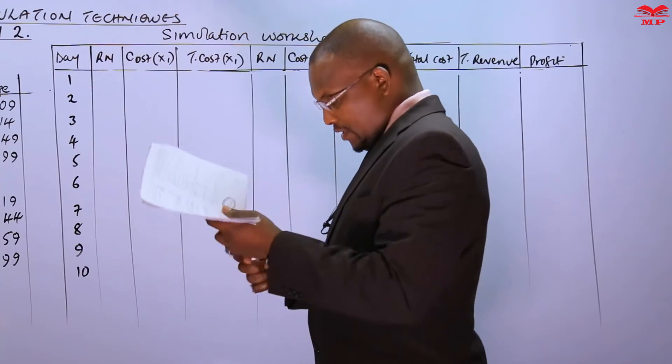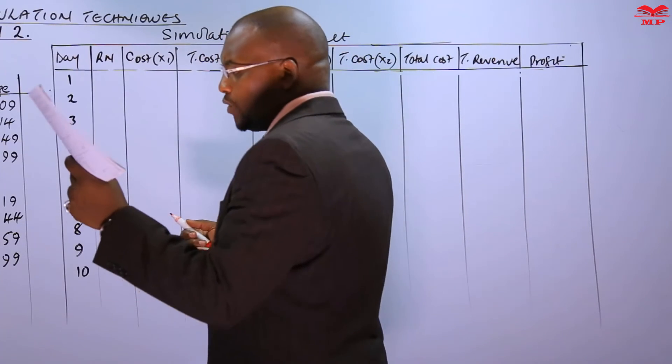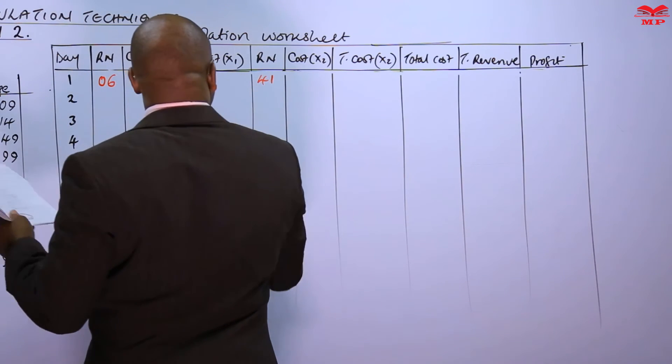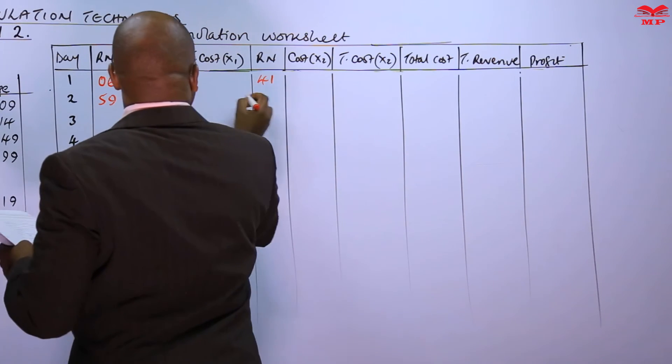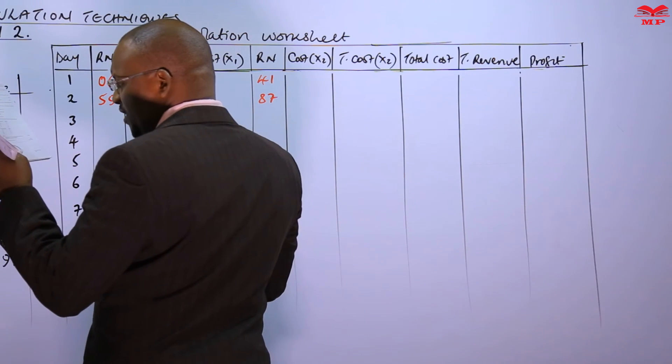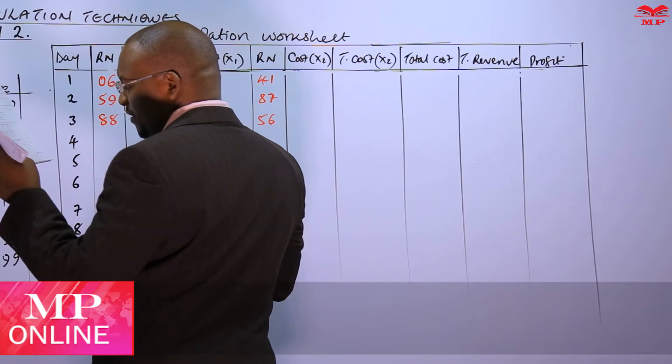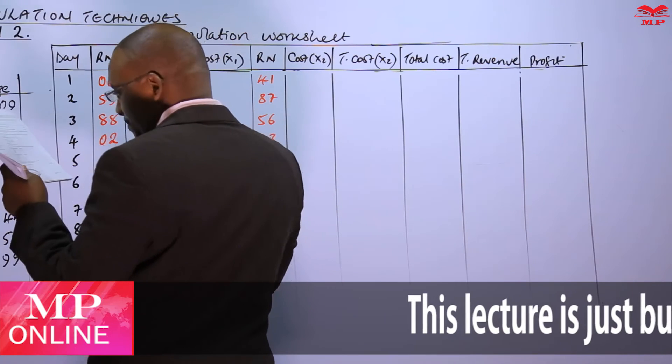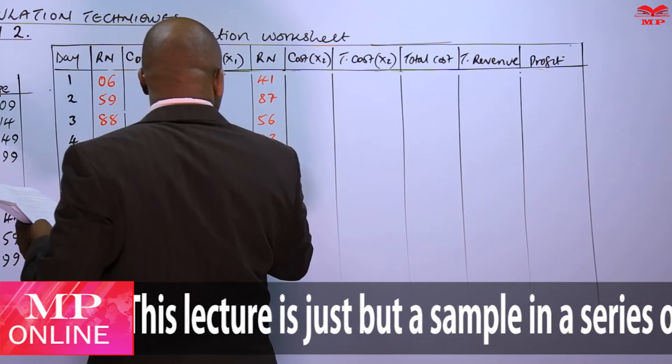The numbers have been given. We'll be picking 2 because of our ranges, 2 decimal places. So we'll be picking 2. So we have 06 and then 41. This is 06. Then this is 41. Then we have 59, 87, 88, 56, 02, 23.